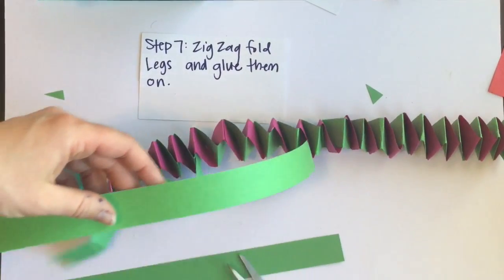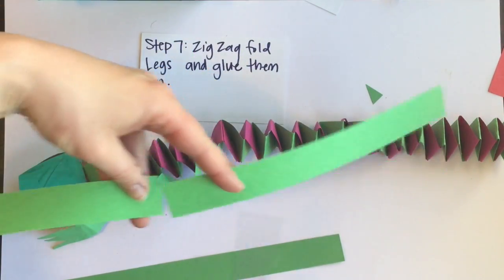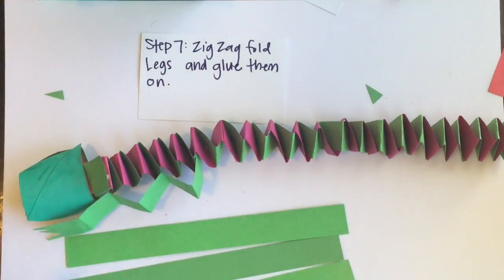So I have one there, one there, cut this in half. And I'm going to do the same thing to make four legs.